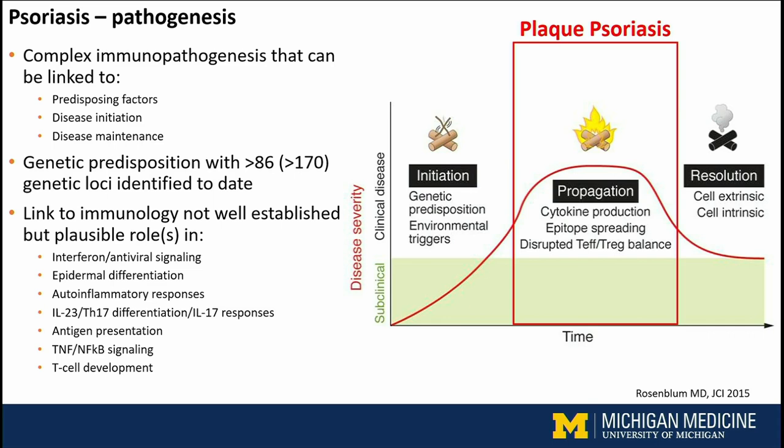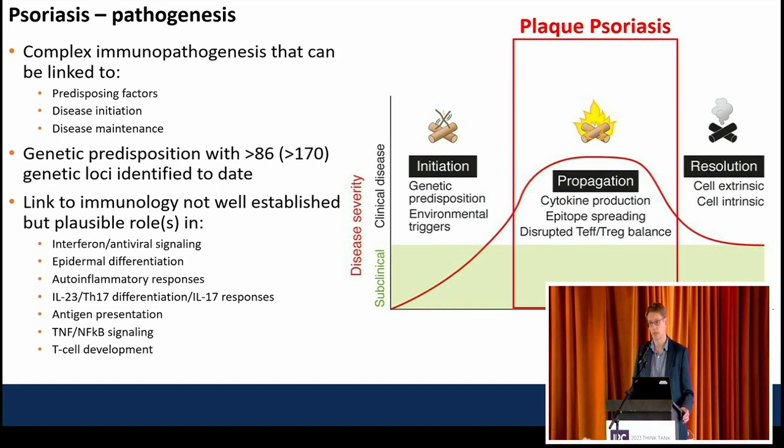It has a very complex genetic predisposition. Today, we know about 86 genetic loci. As Michael Simpson just mentioned, that number is going to be a lot more. If you include the MHC genetic loci, you're going to get up close to 170 different loci that predispose to the disease.